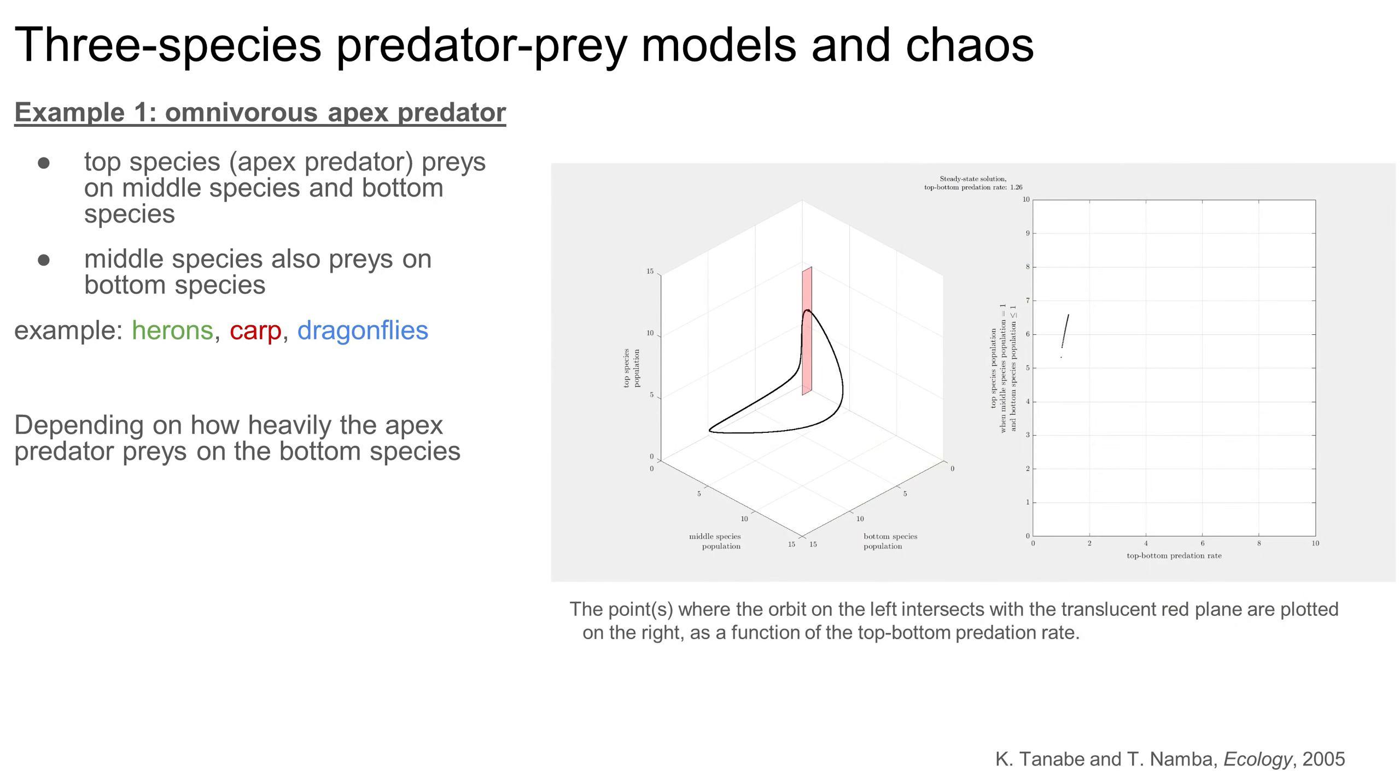I'm simulating this food web and plotting the solution in three-dimensional phase space on the left. I'll get to the right-hand plot in just a second. I'm also treating the rate at which the top species preys on the bottom species as a knob that I can turn up or down to see the effect of omnivory on the food web's behavior. At low top versus bottom predation rates, the three species populations eventually converge to stable levels indicated by a single point in phase space. However, once the predation rate is big enough, the populations start to fluctuate, and in phase space, the point becomes an orbit, or in other words, a limit cycle.